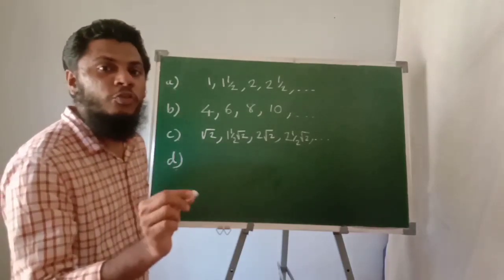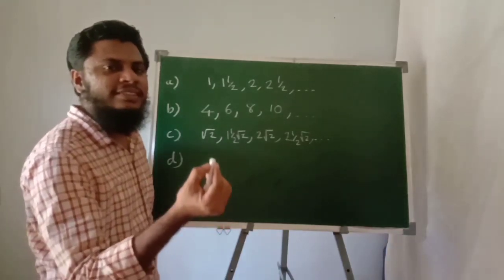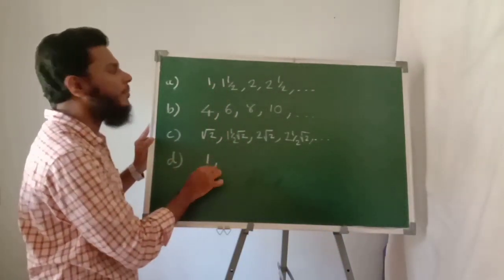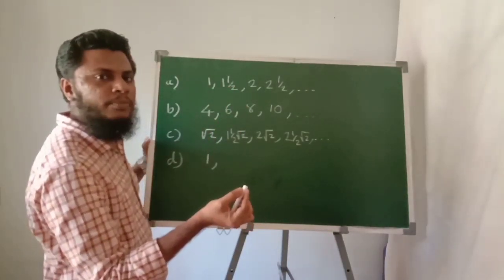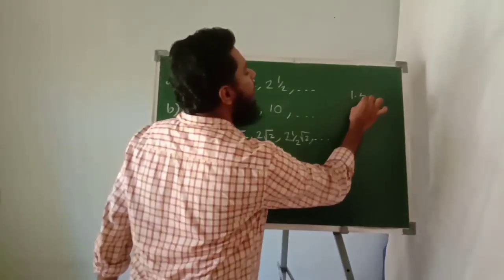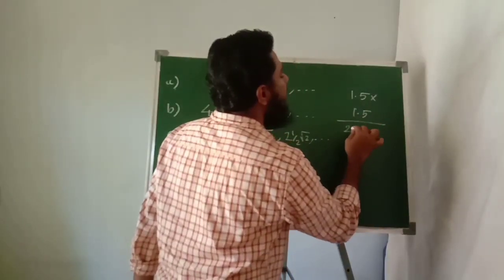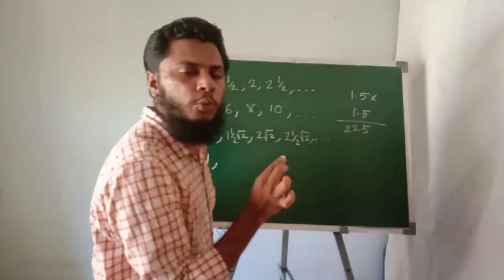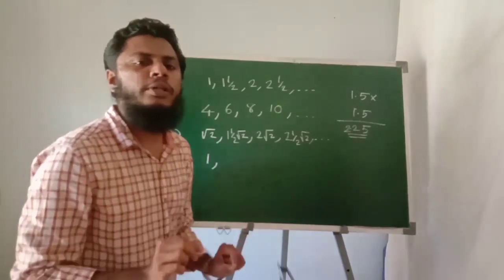Write the sequence of areas. The square area formula is side squared. Side 1: 1 squared equals 1. Side 1 and a half: 1.5 times 1.5 equals 15 times 15 which gives 225, so with two decimal places that is 2.25.